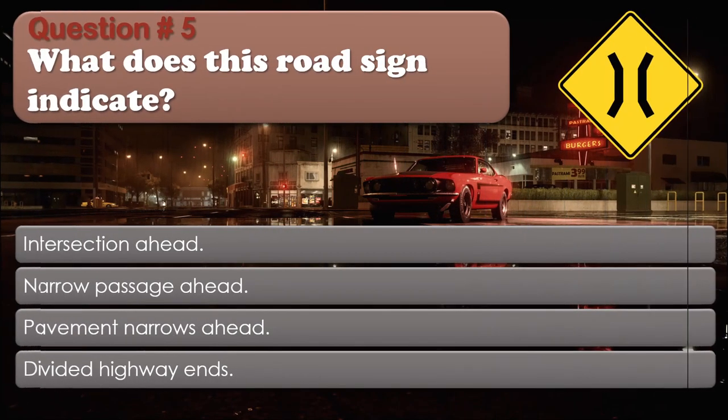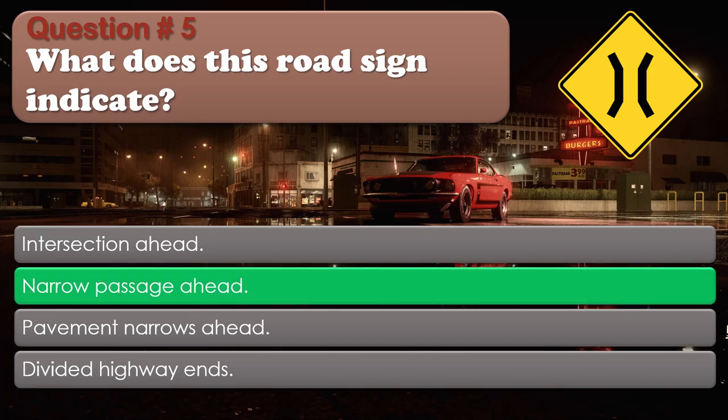Question number 5. What does this road sign indicate? Intersection ahead. Narrow passage ahead. Pavement narrows ahead. Divided highway ends. The correct answer is: Narrow passage ahead.